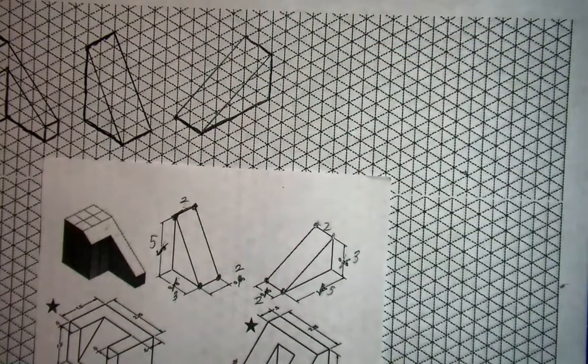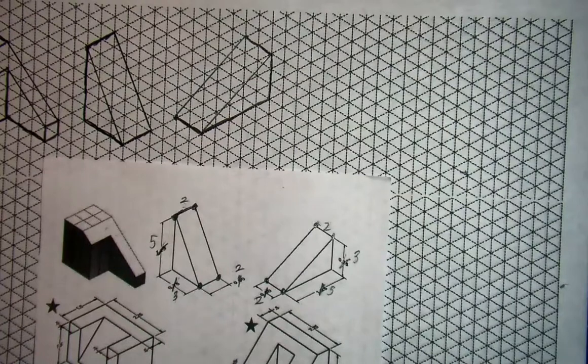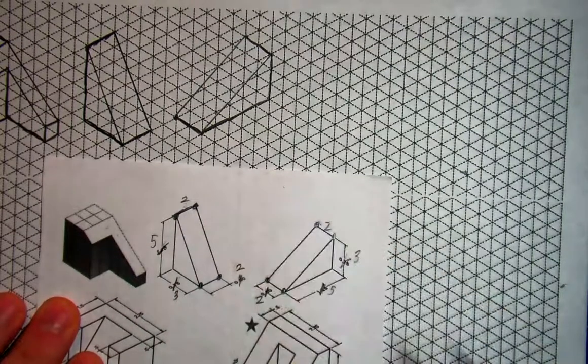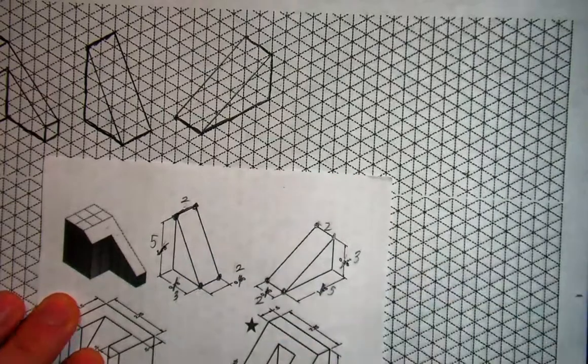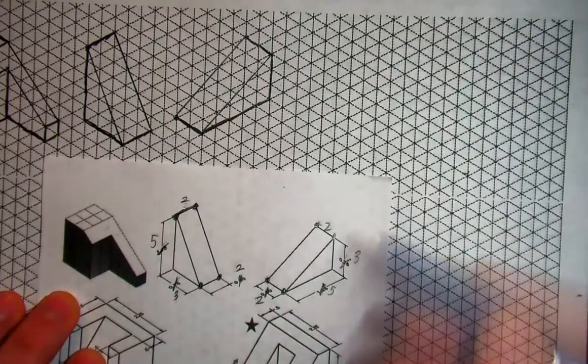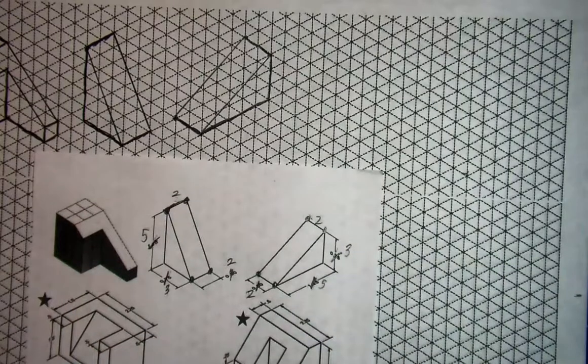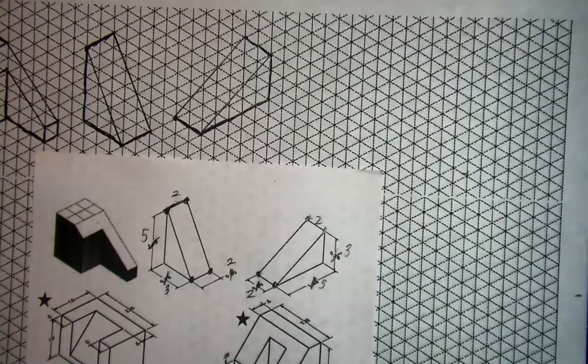And so anytime I'm drawing any kind of slanted shape, I always like to start with the boxed parts, the shapes, the parts that I know the measurements of in height, width, and depth directions. And then I like to add the slants and connect them after I'm done drawing out the parts that I know for sure.